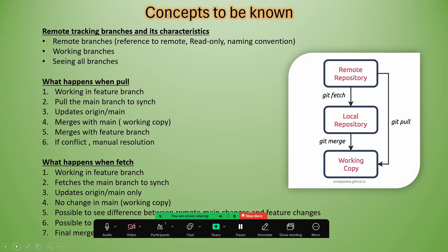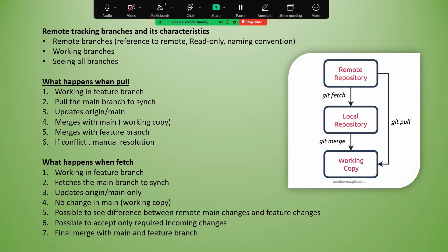Now, what happens when you use fetch? Same as usual — working in the feature branch — but instead of pulling changes from the remote main branch, you use fetch. It updates only the remote tracking branch, which is origin/main. No changes are made to your working copy local main branch. You can see the differences between your remote main and your feature branch. The change stops at origin/main, and it is our responsibility to then merge with the local main and feature branch.